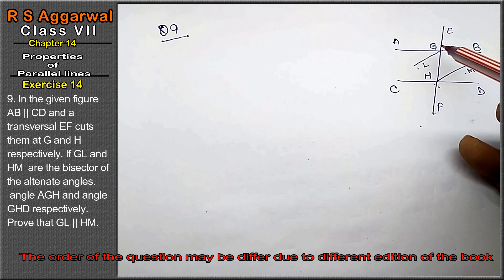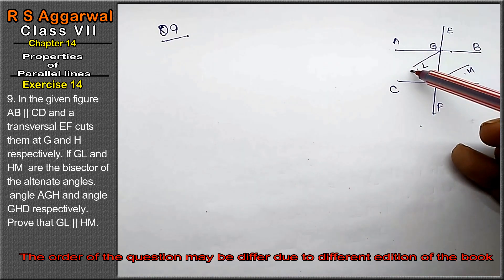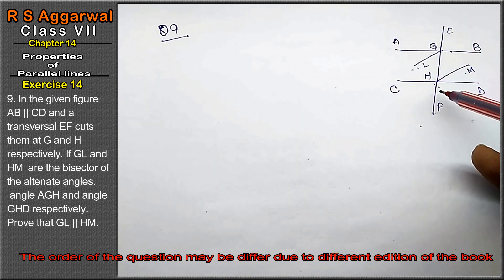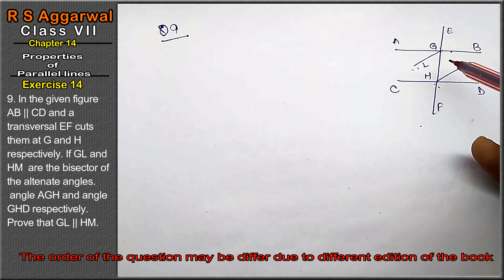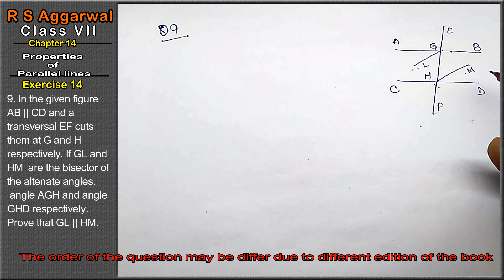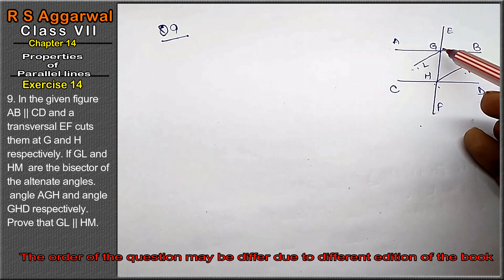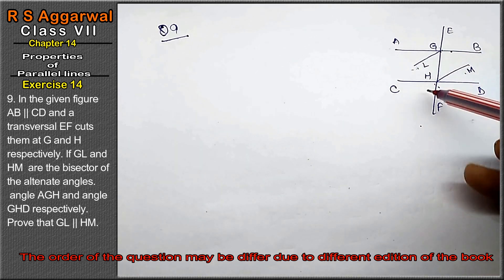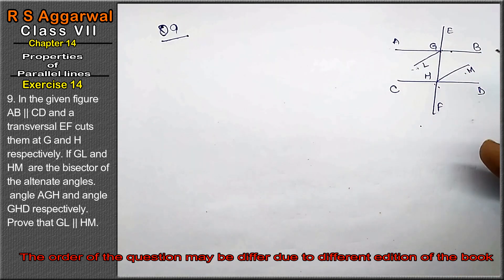AGH and GHD are the angles whose bisectors are given. And GHD respectively. Prove that GL is parallel to HM.